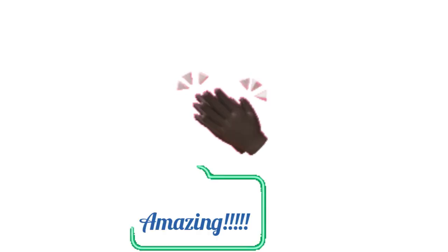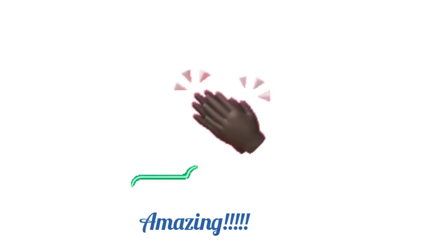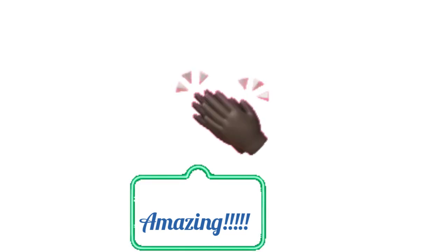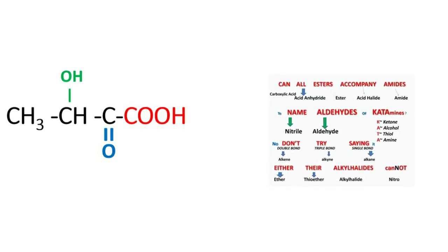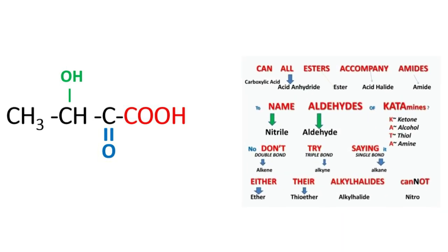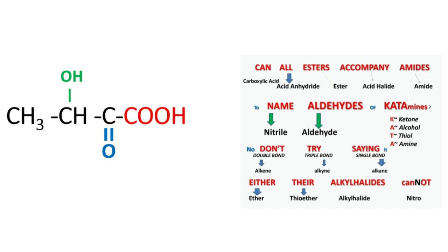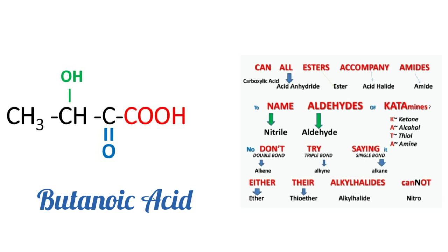With this in mind, let's quickly name the compound we left unnamed at the beginning of the video. The compound had a variety of functional groups, but now it's easy because you have the mnemonic in mind. We can see that carboxylic acid dominates this compound because from our mnemonic it was carboxylic acid that was first mentioned — hence the parent name becomes butanoic acid. Now go ahead using IUPAC rules to give the full name of this compound.